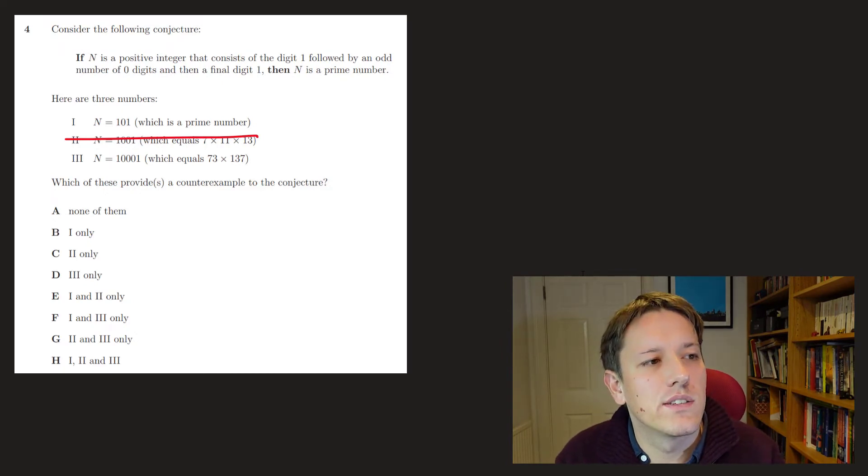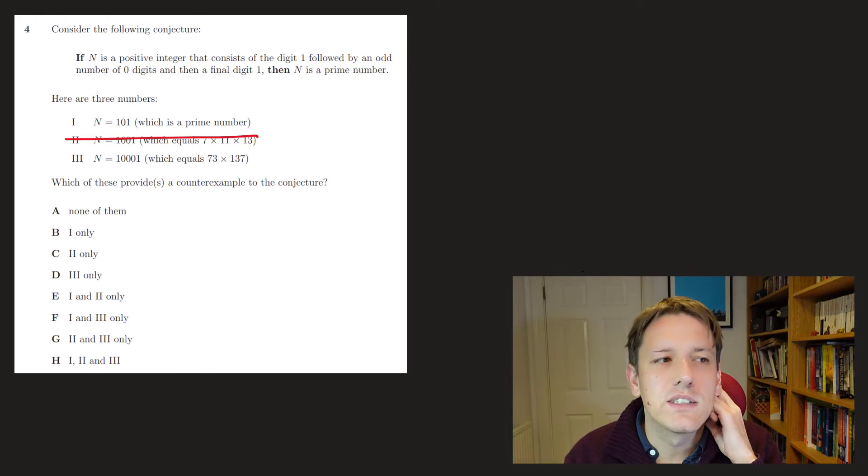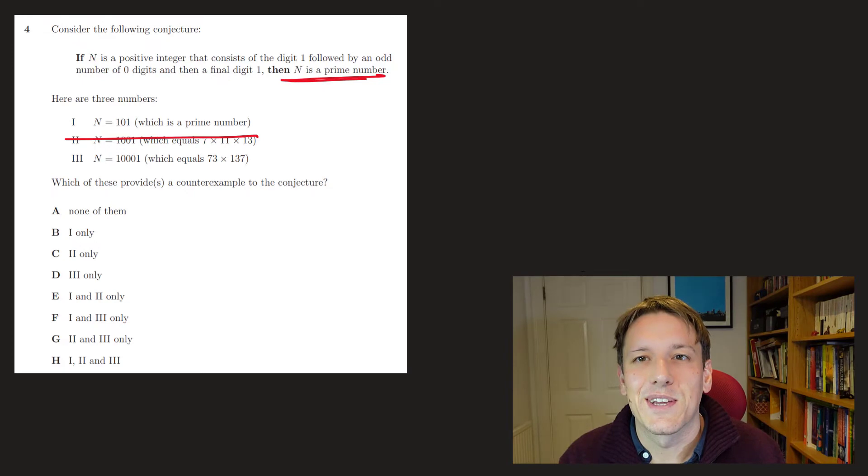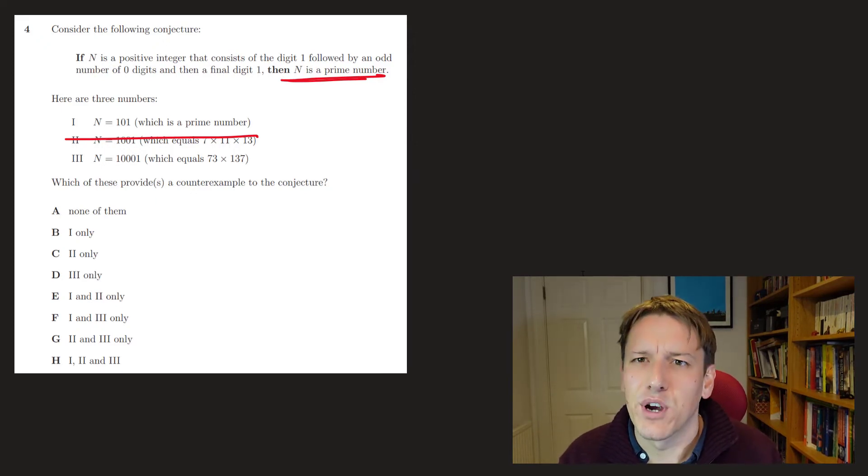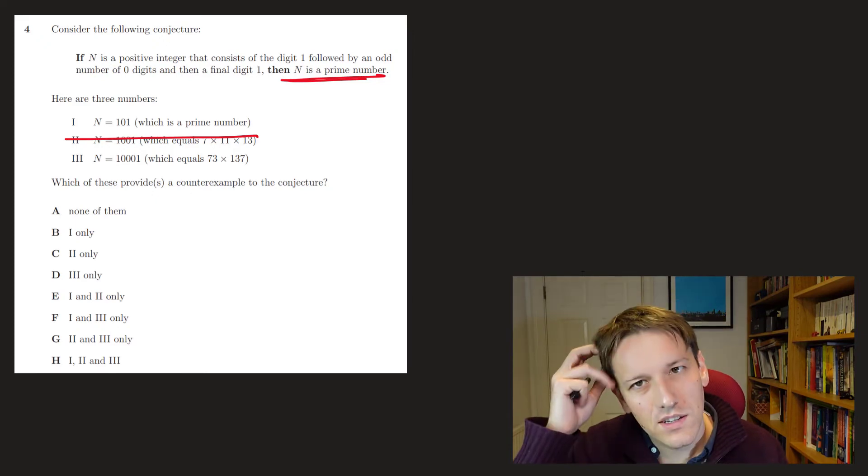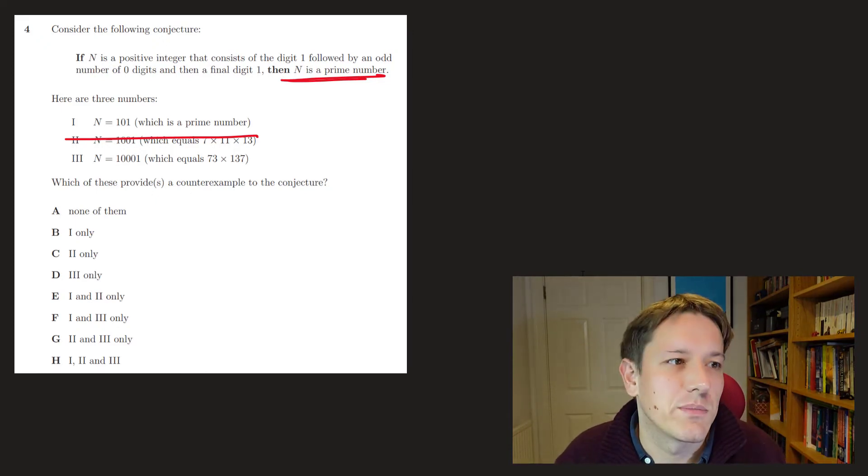So 101 and 10,001 could in theory be counterexamples. They both satisfy the premise here. 101 has an odd number of 0s, and this one has an odd number of 0s as well. But then it also has to satisfy the conclusion, that's the word I was looking for earlier, the conclusion of the statement, which is that n is a prime number. But 101 is a prime number, so it's not a counterexample. It actually verifies the statement. It doesn't prove it, but it's a correct, it doesn't provide a counterexample. But 3 does provide a counterexample, because it satisfies the premises, but does not satisfy the conclusion, because it's not a prime number. So it's only 3 that can be a counterexample here, and the answer is D.